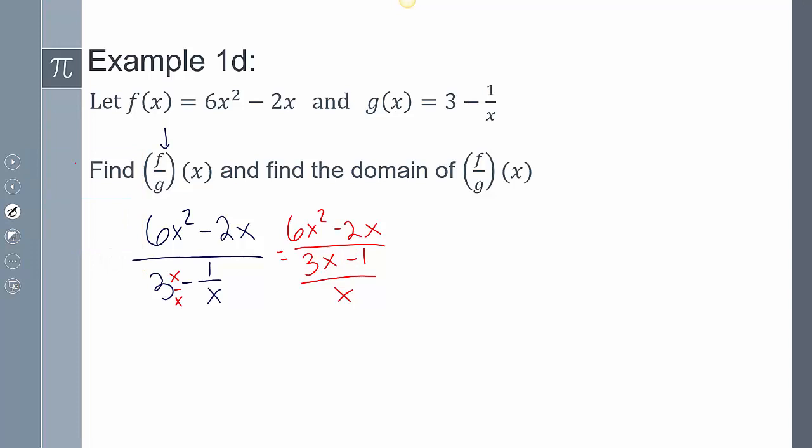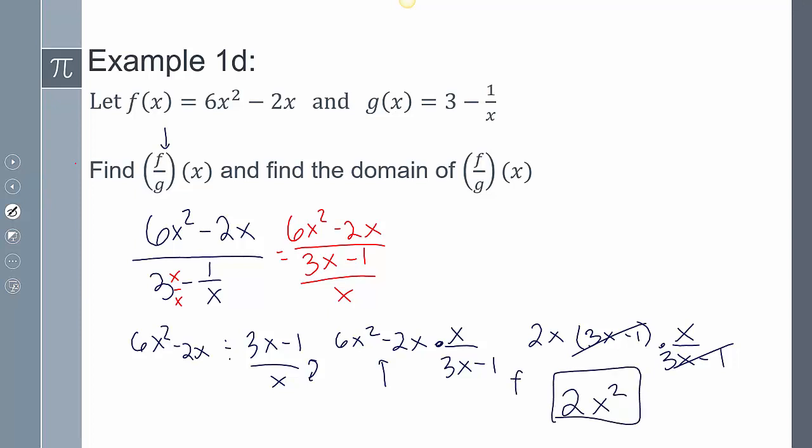And so now I could look at this expression as (6x² - 2x)/(3x - 1) divided by x. So now that it's division like that, I can flip the second. So I have those get flipped. I'm going to get (6x² - 2x)·x/(3x - 1). This I can factor what's in common, so I factor out a 2x. I'm going to get 2x(3x - 1)·x/(3x - 1). The 3x - 1's cancel out, so I'm left with 2x² as my result. So f/g of x equals 2x².